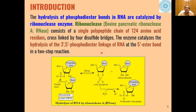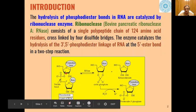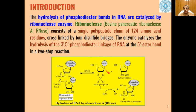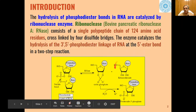In this case, this enzyme catalyzes the 3′-5′ phosphodiester linkage of RNA at the 5′-ester bond in a two-step reaction which proceeds through a cyclic phosphate. In the first step, a ribonucleoside 2′,3′-cyclic phosphate is formed.